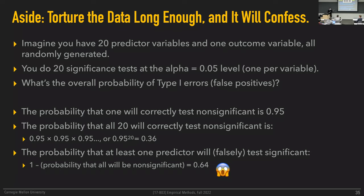This is why I hate seeing papers that measure all of the things that are measurable, then run statistics over all of them, and report some significant differences somewhere without any justification for why they're measuring the things they're measuring other than that they're measurable. The more things you test, the more you will find something. If you don't argue that those things somehow meaningfully represent some theoretical construct you actually care about, there's little value in that analysis.